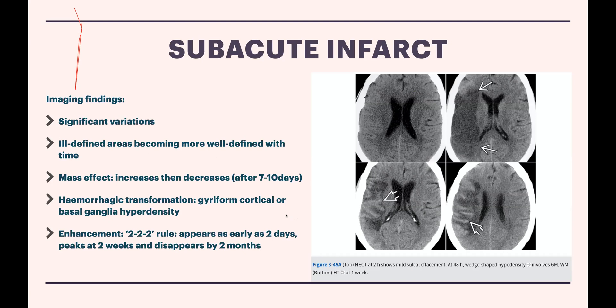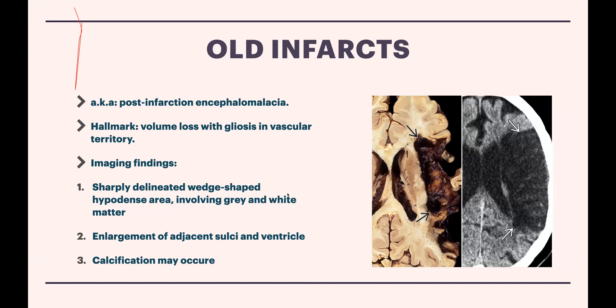A pitfall in the subacute period: if you give contrast in this period, subacute infarcts can have bizarre enhancement and look like a tumor, which can mislead the analysis. The symptoms are also not clearly cut as a typical acute infarct. So when a patient presents in the subacute period and contrast is given, it can throw you off from correctly diagnosing infarct.